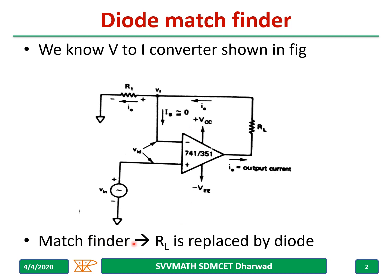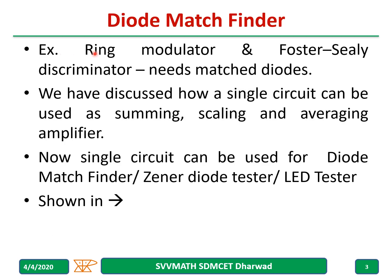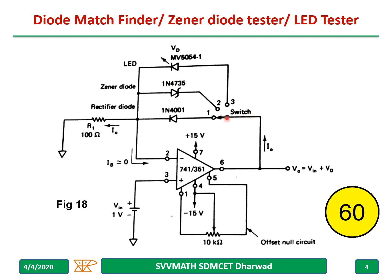In the diode match finder, we simply replace RL by a diode. These diode match finders are needed to find matched diodes, especially in ring modulators and Foster-Seeley discriminators. A single circuit can be used to test the diode, Zener diode, as well as LEDs. The diagram is shown in the next slide — this circuit diagram can be used for diode match finding, Zener diode testing, as well as LED testing. Pause for a minute and go through this circuit.